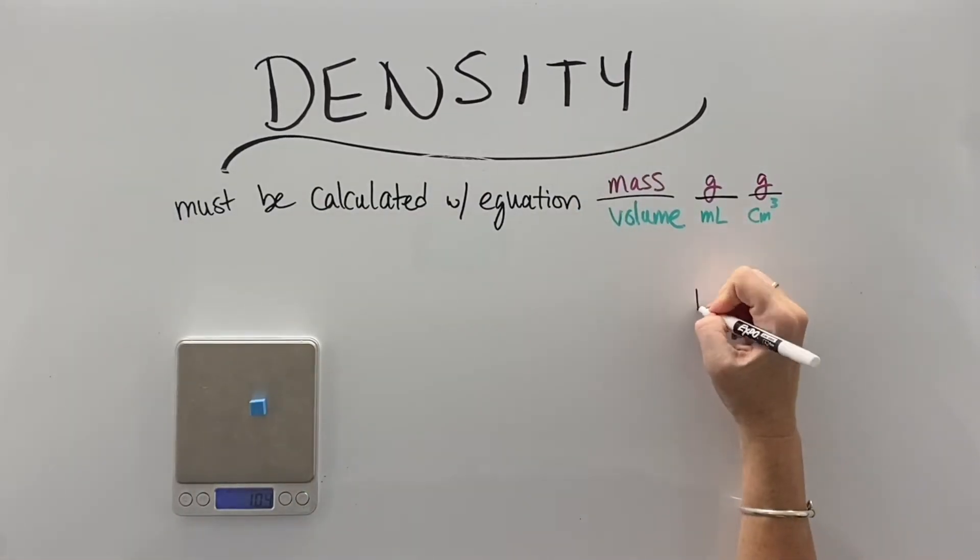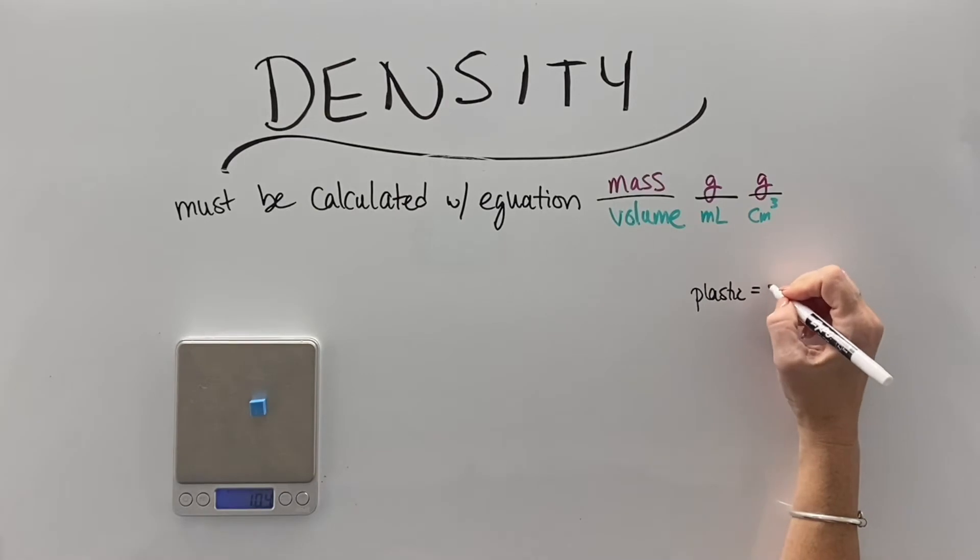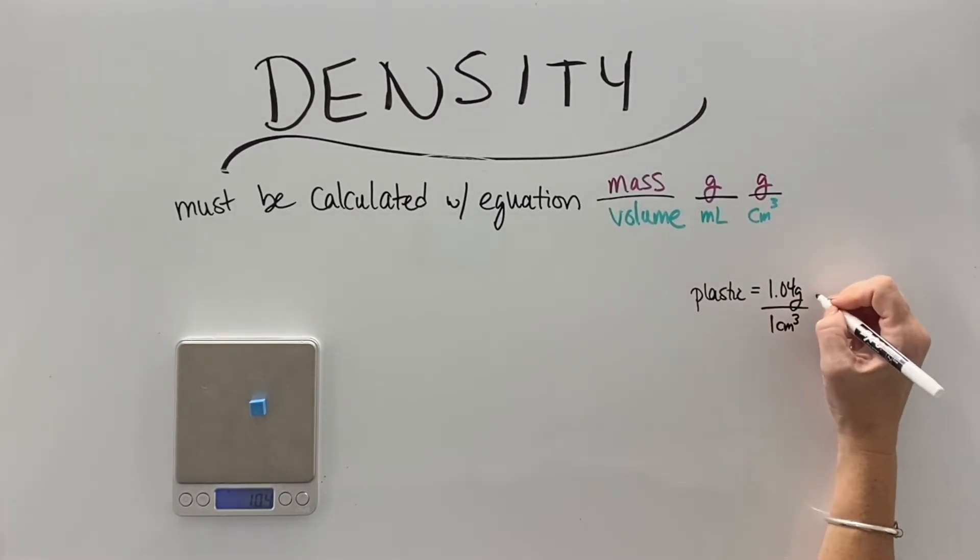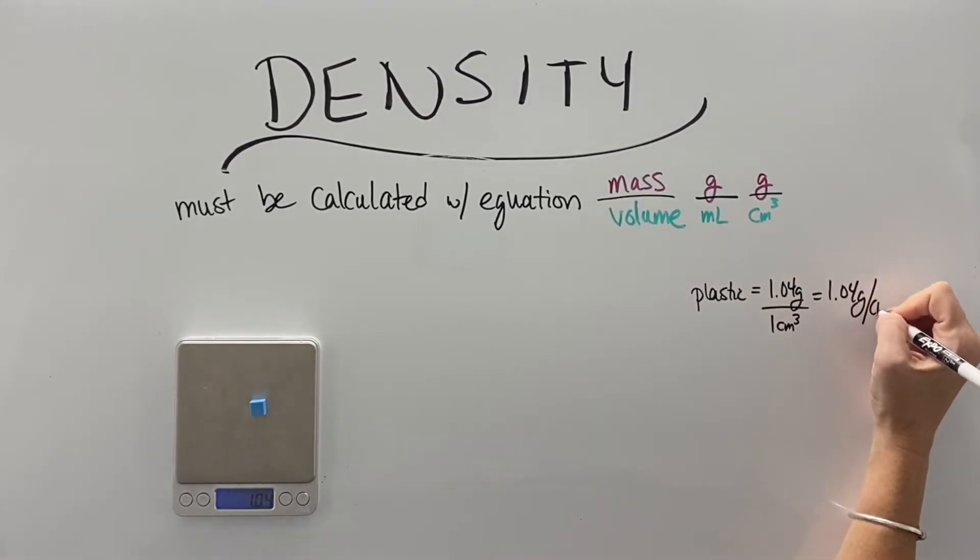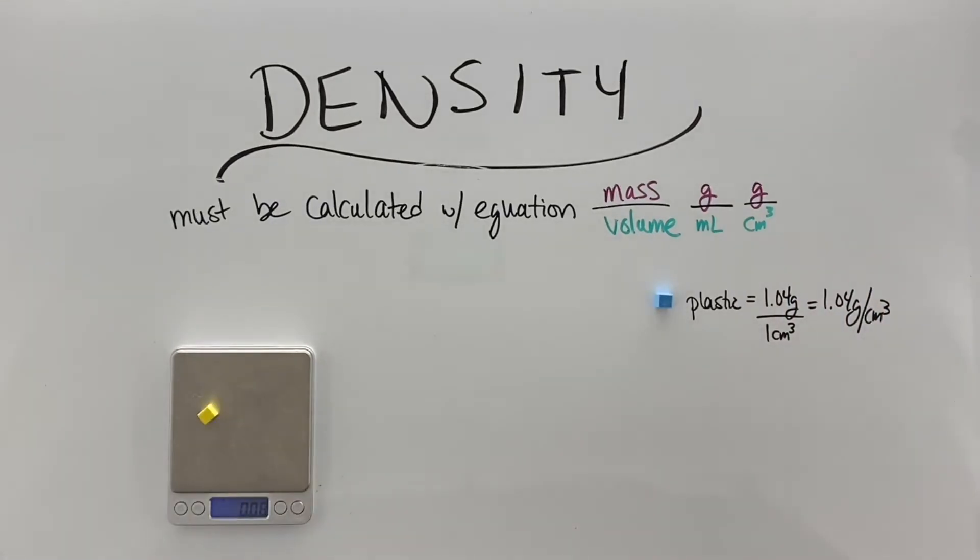In order to calculate them, we take the mass divided by the volume. So this one cubic centimeter has a mass of 1.04 grams, so its density is 1.04 grams per cubic centimeter.